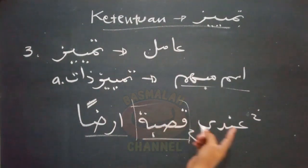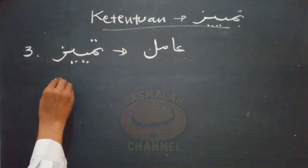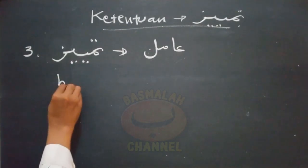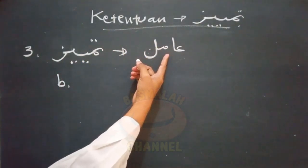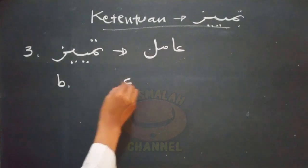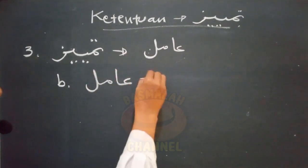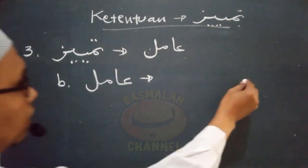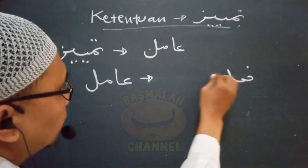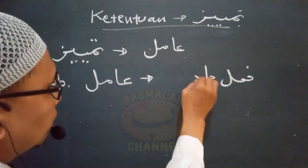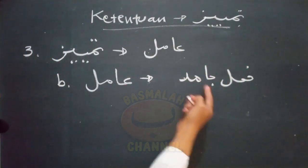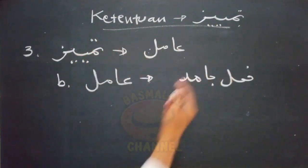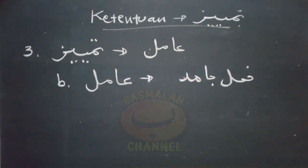Jadi tidak boleh dikatakan 'Aindi arbon kosbah'. Kemudian ketentuan yang kedua dalam hal ini, Tamyis tidak boleh mendahului amilnya manakala amil berupa fi'il jamid. Jadi manakala amilnya berupa fi'il jamid, maka Tamyis tidak boleh mendahuluinya.